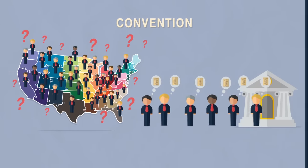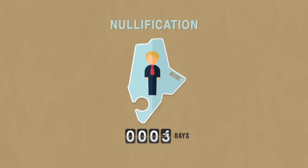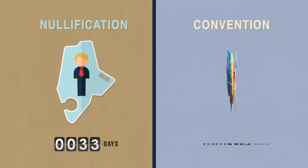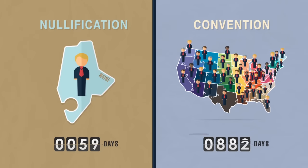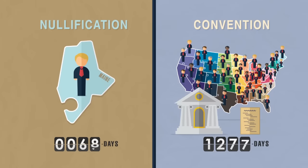With nullification, it is usually a short process because only one step is required by a state, not several steps as with a convention. With a convention, this would be a much longer process. It could take years by the time you choose delegates, have a convention for proposing amendments, and then ratifying those amendments by three-quarters of the states.